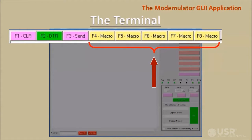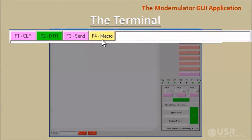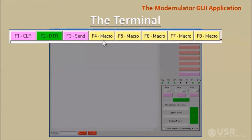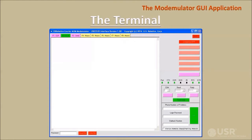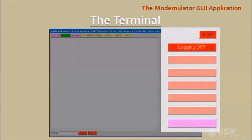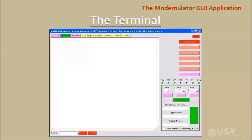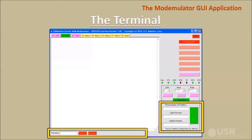Five programmable macro buttons are also provided. To program a macro, shift-click the button or shift-press the function key. A text box will appear — enter the macro string, then click the button or press the function key again to close the text box. Then click the macro button or press the function key to send the macro string from the computer's serial port. Macros are useful for manually sending common repetitive commands. The remaining controls are disabled in terminal mode, except for the exit button, which can be used to close the application from terminal mode.